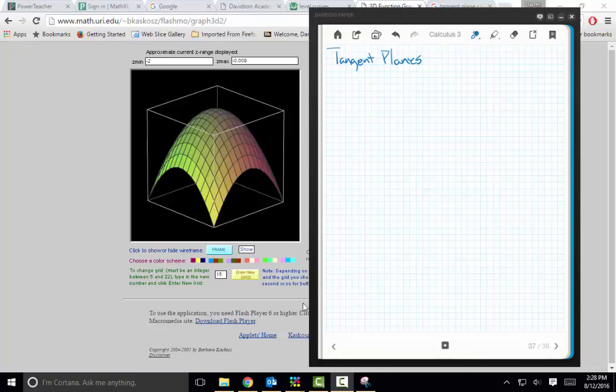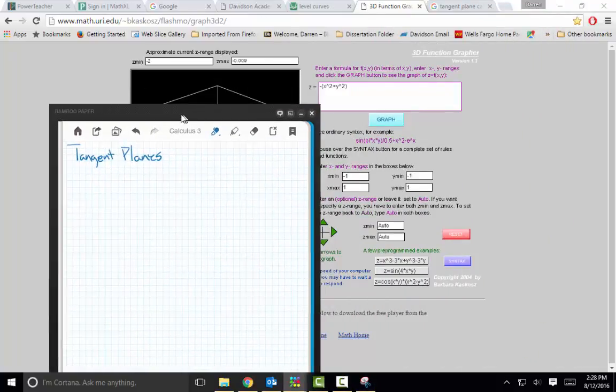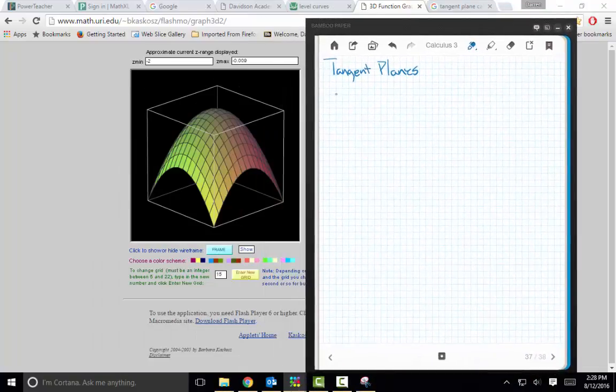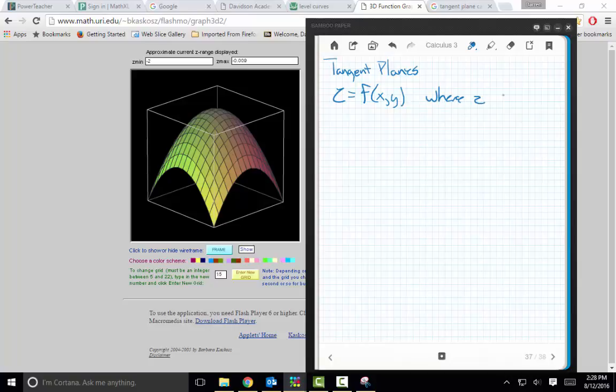For example, I've got a little snippet of this guy right here, which is, by the way, this function. If I've got a function z equals f of xy, where z has continuous partials, which just means I can take partial derivatives of z everywhere, without having any jags or spikes or anything like that. So we're going to start with this.